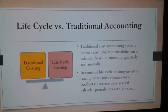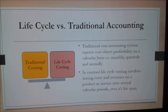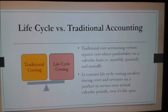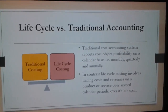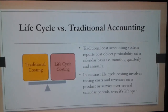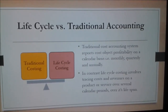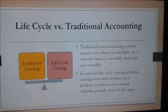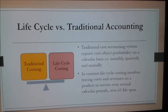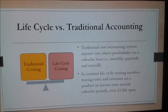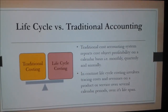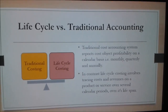What is the difference between traditional cost accounting and life cycle cost accounting systems? Traditional cost accounting reports cost object profitability on a calendar basis — monthly, quarterly, and annually. While life cycle costing involves tracing costs and revenues on a product or service over several calendar periods, or over its total lifespan.